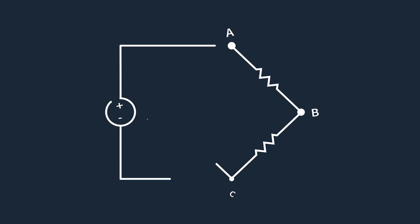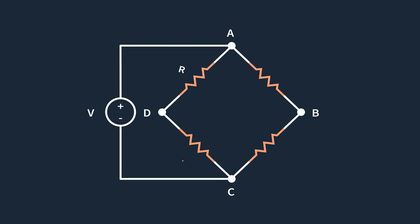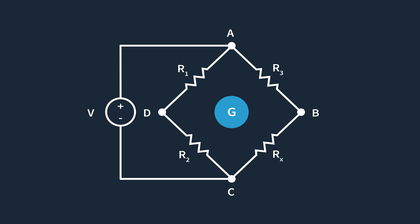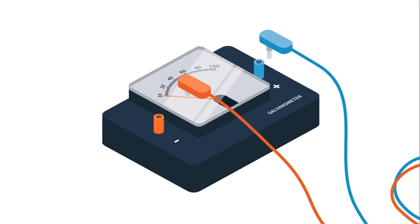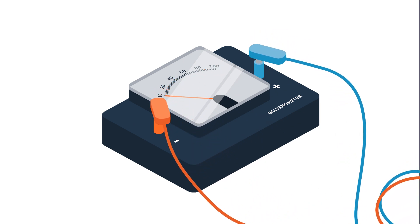Among these, the Wheatstone bridge stands out as a widely used precision circuit for measuring unknown resistances. It typically consists of four resistors arranged in a diamond-shaped configuration with a galvanometer or voltmeter connected across the bridge to detect voltage differences. A galvanometer is simply an instrument used to detect and measure small electrical currents, typically by observing the deflection of a needle or dial.